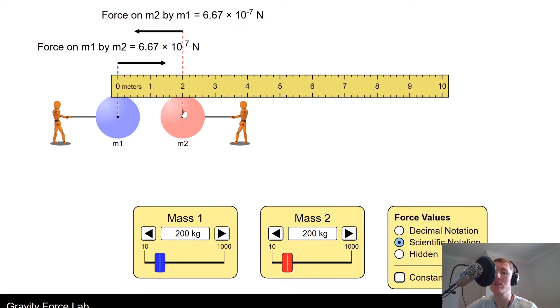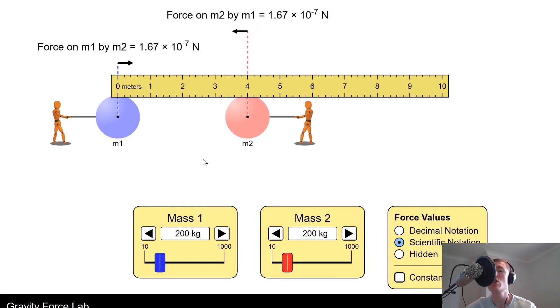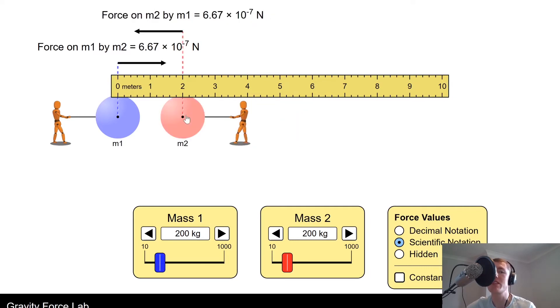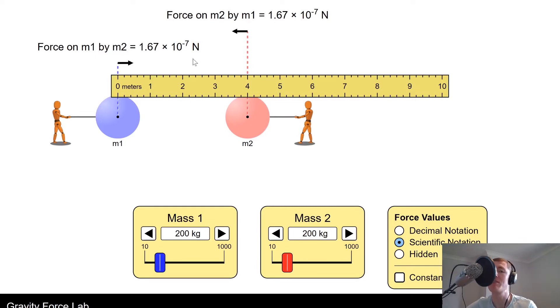So if we double this distance from 2 meters to 4 meters, you should see that we've quartered the value of force there, going from 6.67 times 10 to the minus 7 to a value of 1.67 times 10 to the minus 7 newtons.